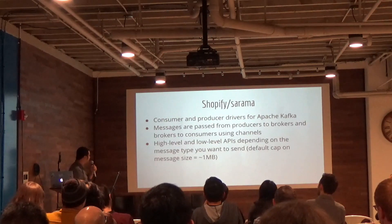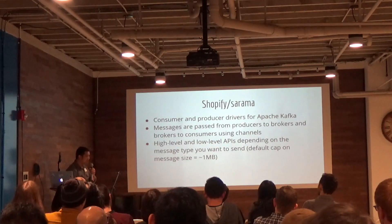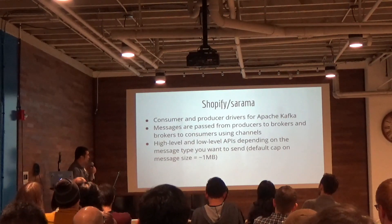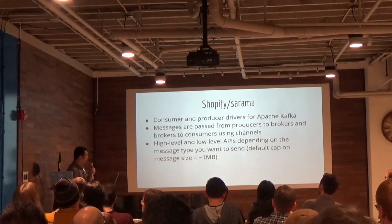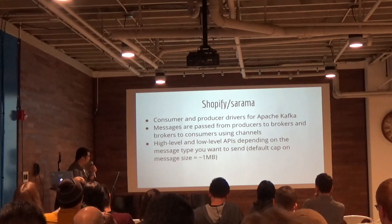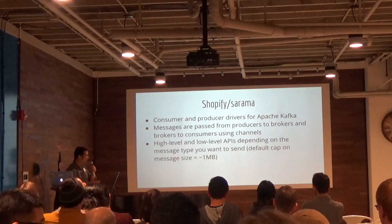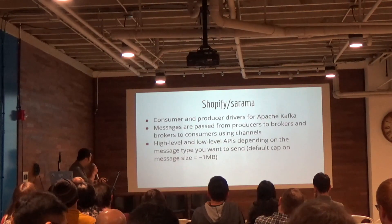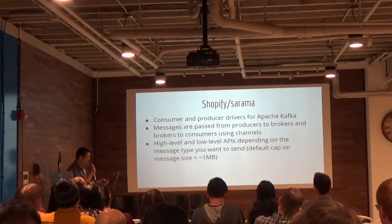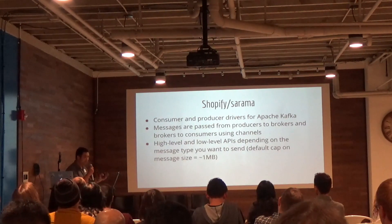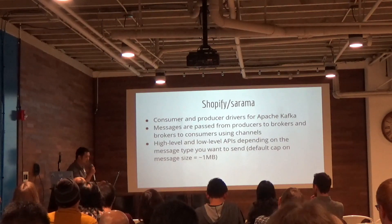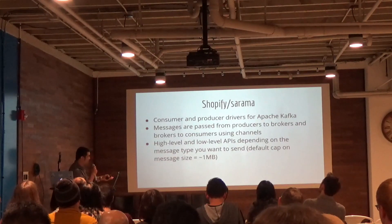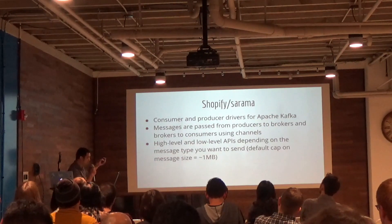You use the low-level API for binary data. The default cap on message size is around 1 meg, and so understandably you take a performance hit to encode your messages. Additionally, with the way that Kafka messages work, if you send messages 1, 2, 3, 4, and 5 in a specific order, there's no guarantee that you'll receive those messages from a topic in that exact same order, which is why we'll care about the timestamps in a second and look at the struct that represents a message.